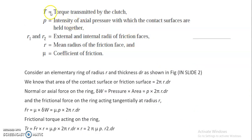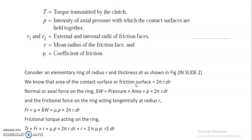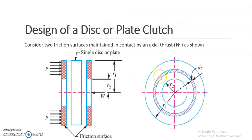Now let us say: T is the torque to be transmitted by the clutch; P is the intensity of axial pressure with which the contact surfaces are held together; R1 and R2 are the external and internal radii of the friction faces; R is the mean radius of the friction face; and mu is the coefficient of friction.